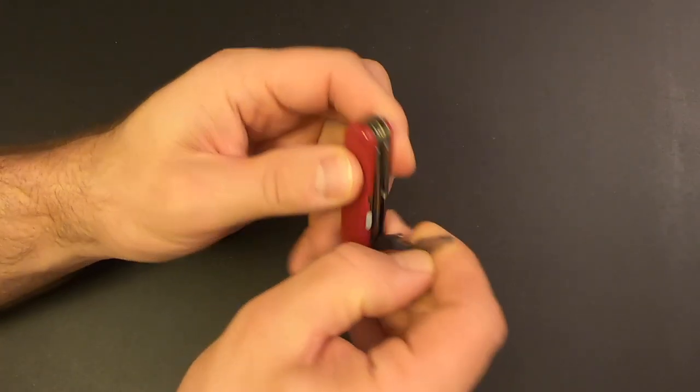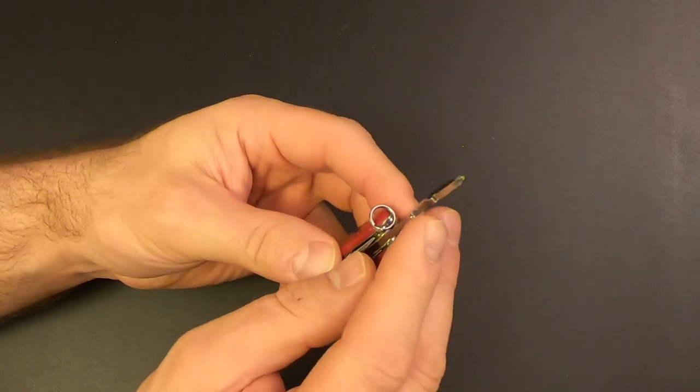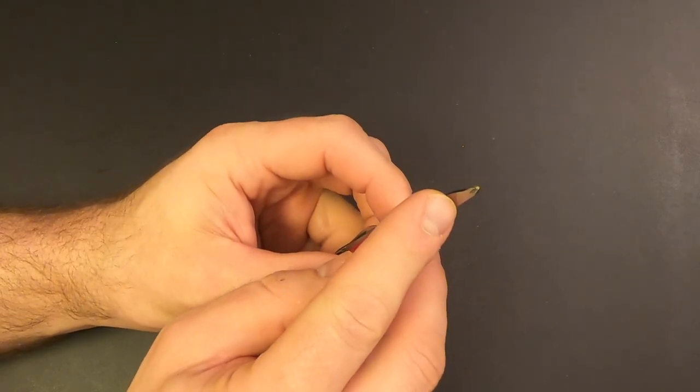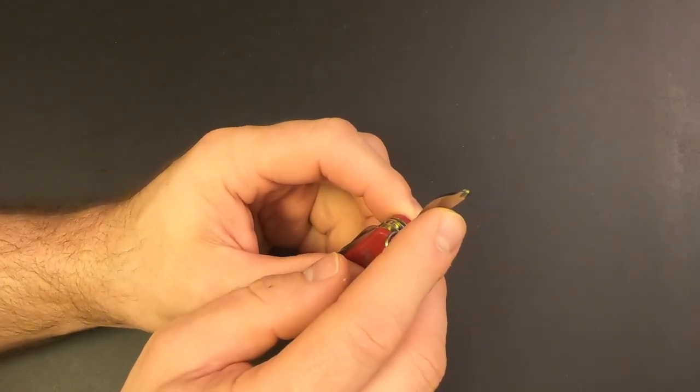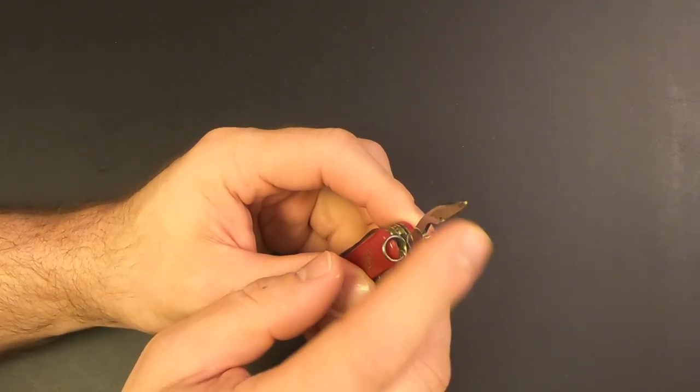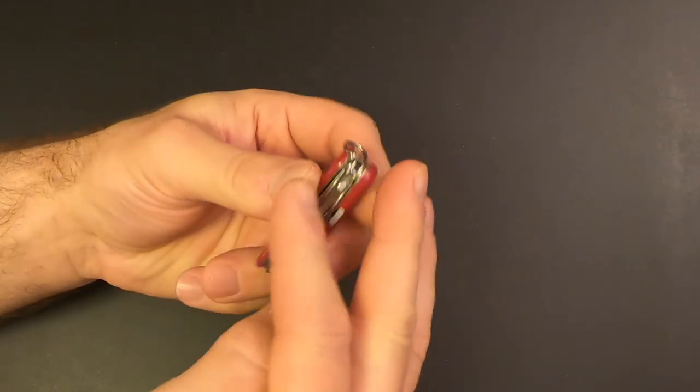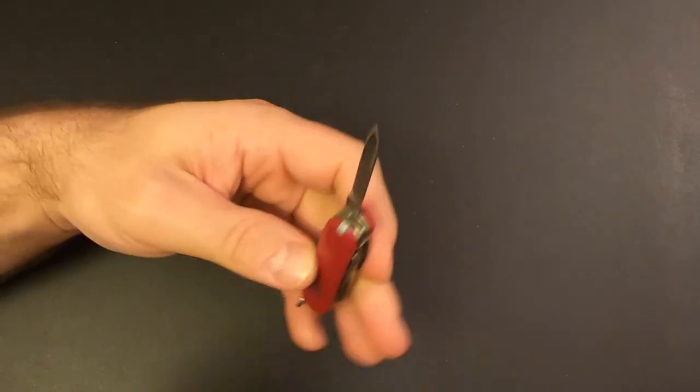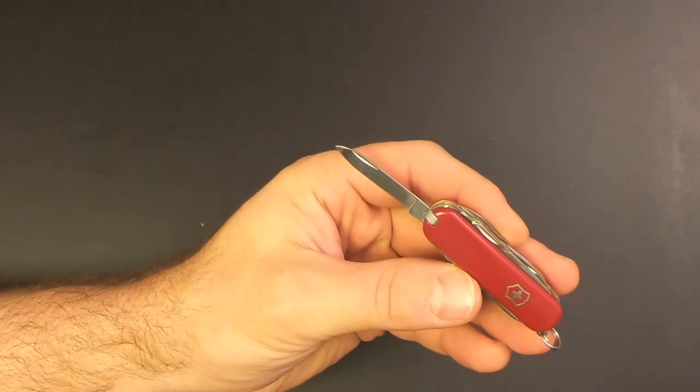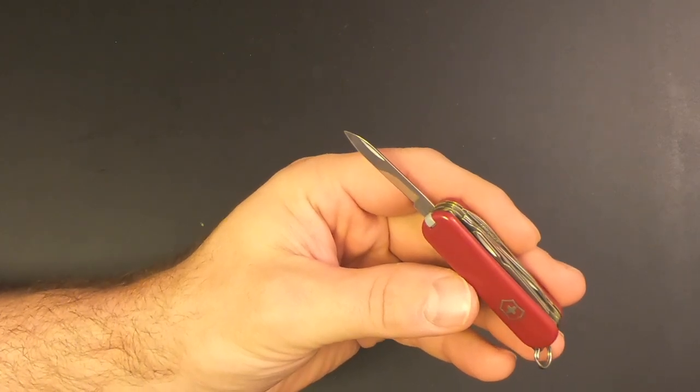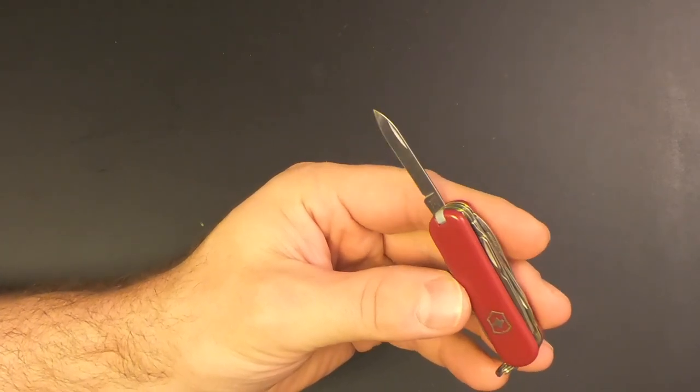Then we've got a screwdriver, a Phillips head screwdriver. And the screwdriver is magnetic, which comes in really handy when you're working with small screws. I use this all the time. Then there's a bottle opener and a wire stripper. Then we've got the main blade, which is razor sharp out of the box and easily resharpened when it gets dull.